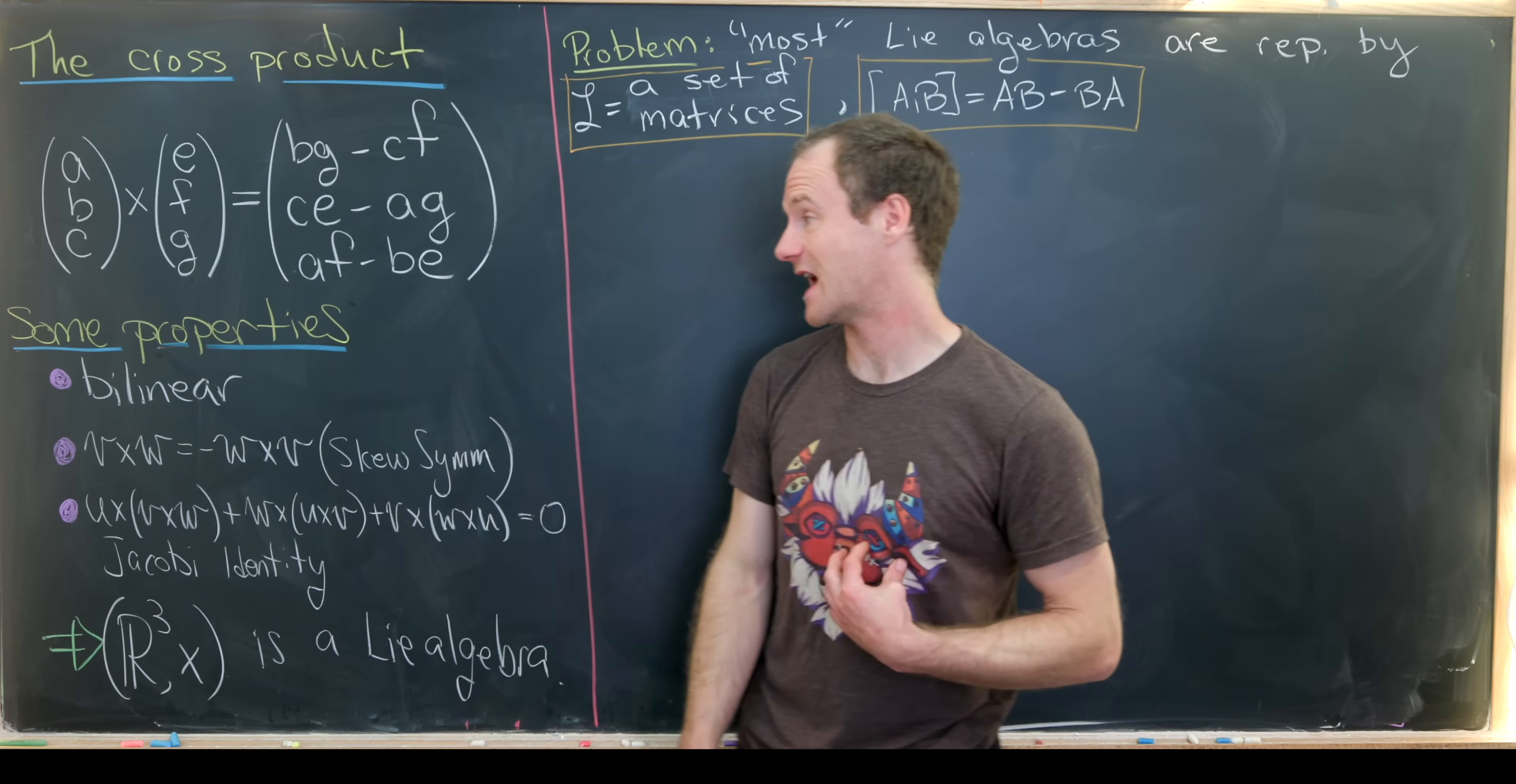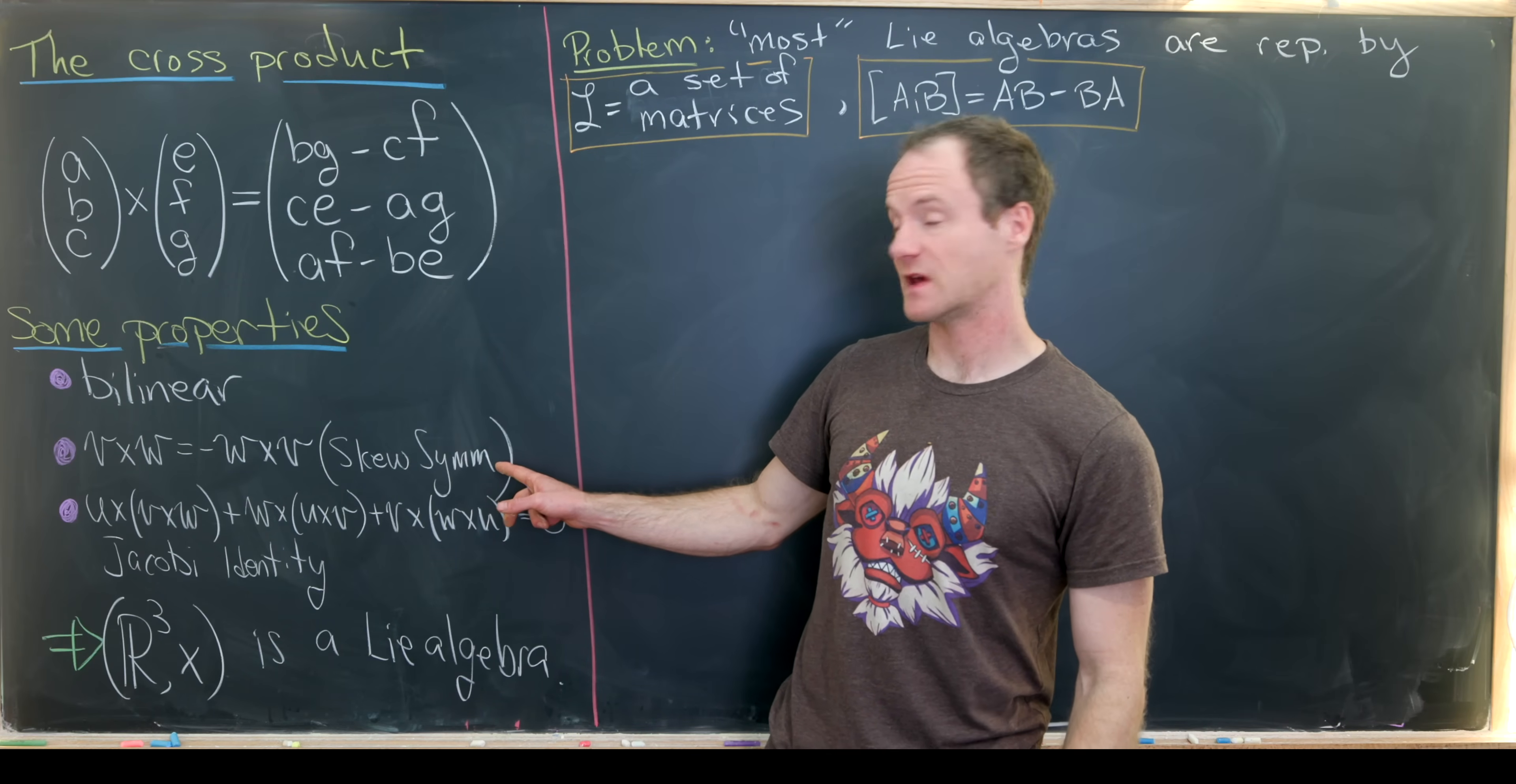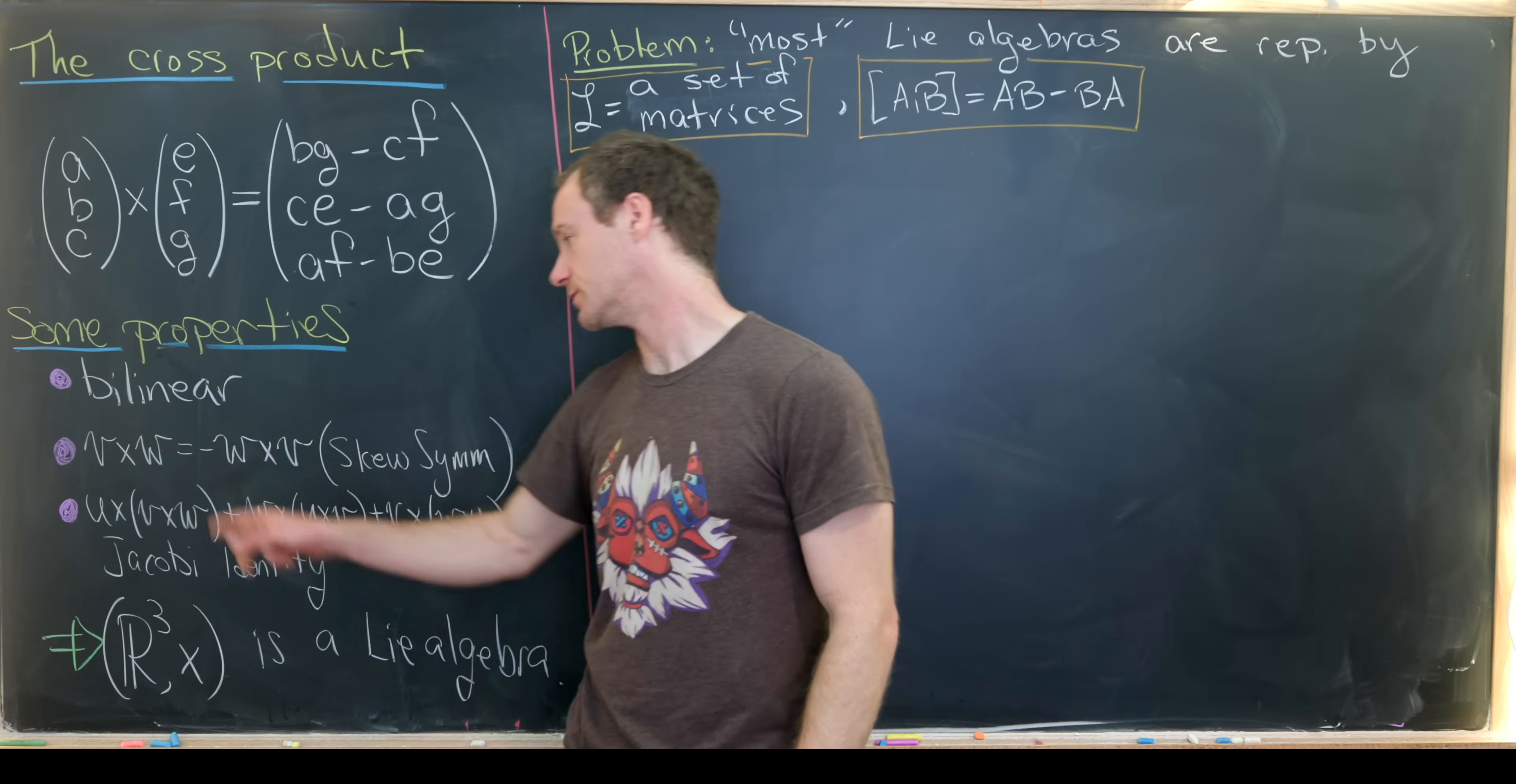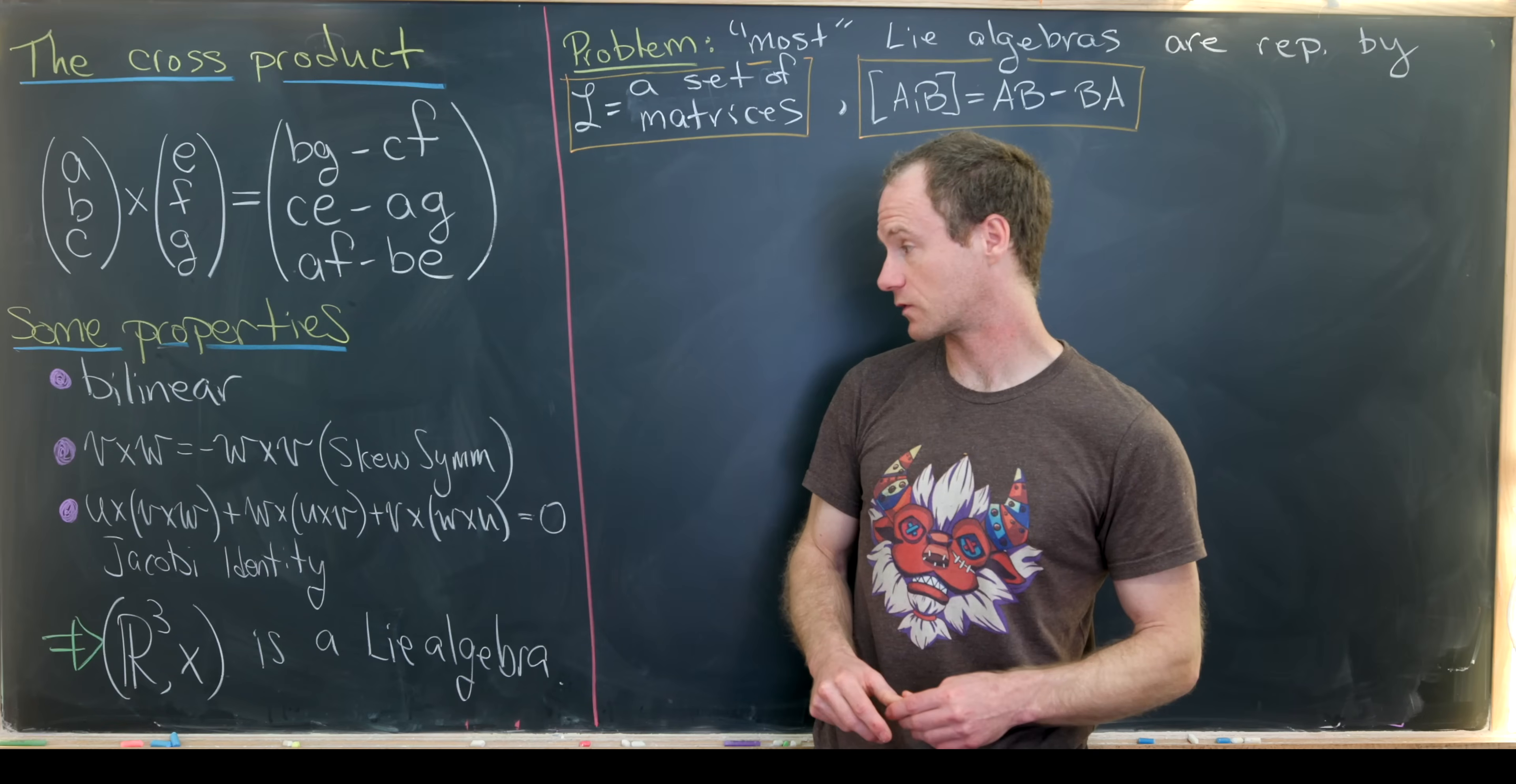The first is that it's a bilinear operation. The second is a certain skew symmetry. So that means it's anti-commutative. If we take V cross W, you get the negative of W cross V. Sometimes this is illustrated by something called the right-hand rule.